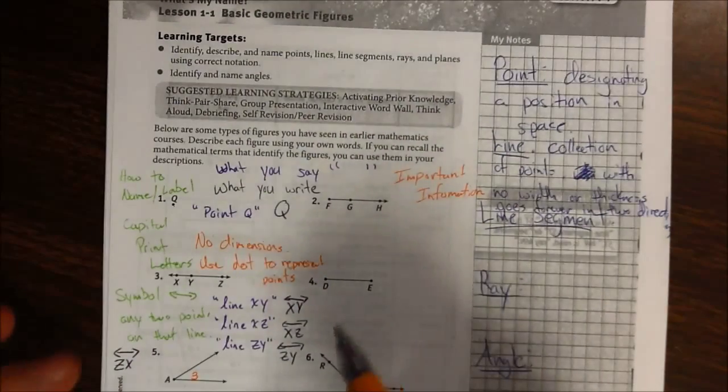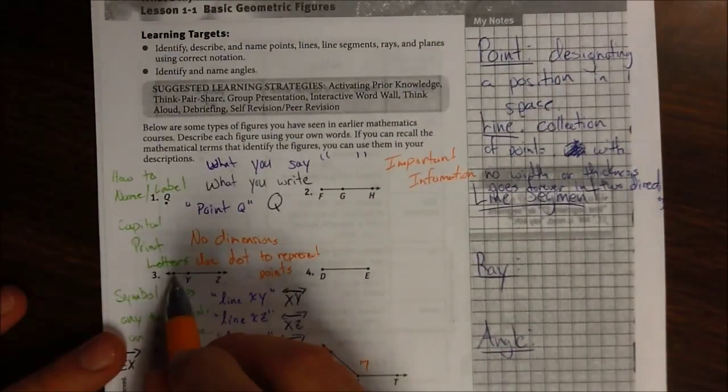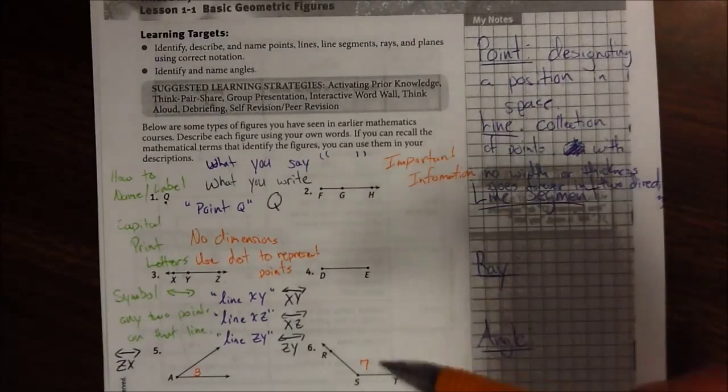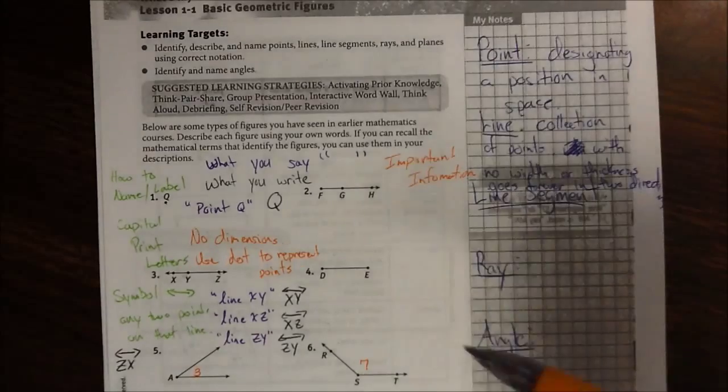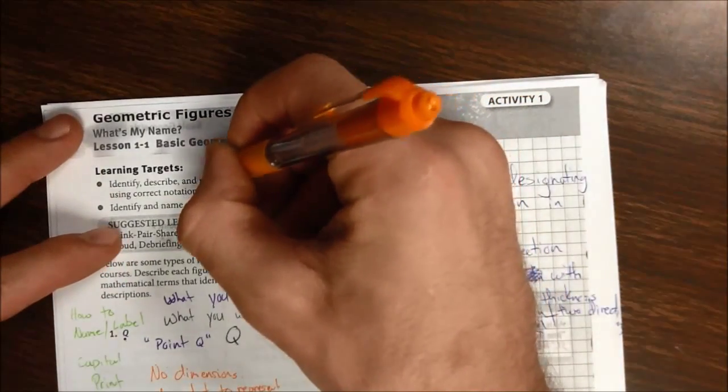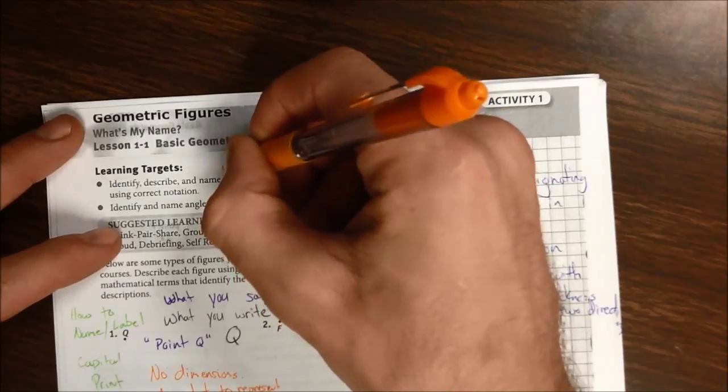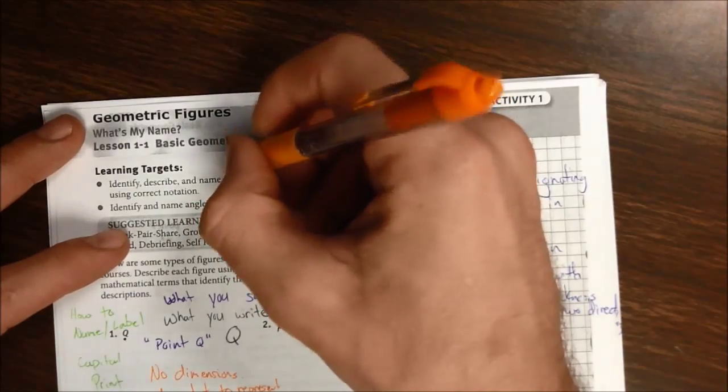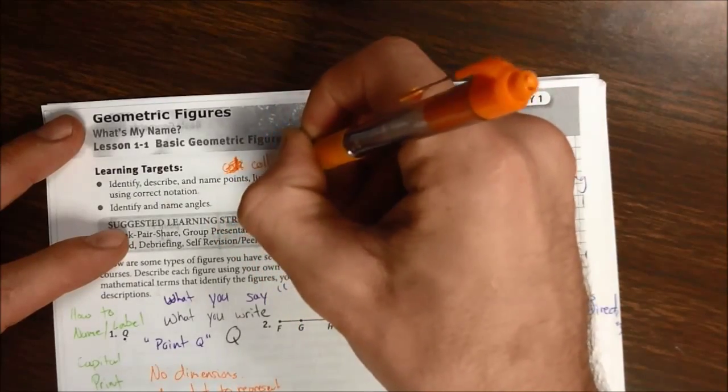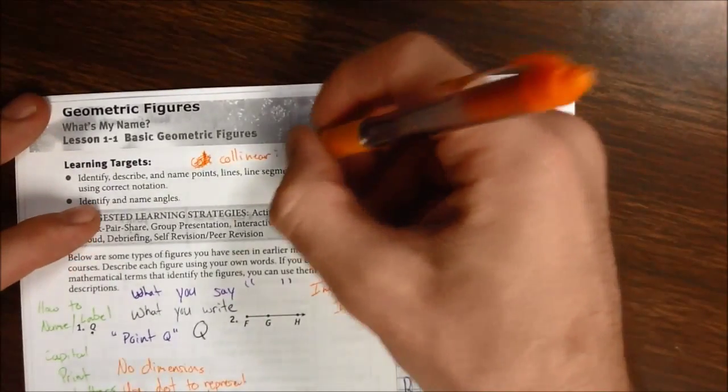There's two terms I'm going to talk about really quickly. We have these three points, X, Y, and Z. Now, since they're all on the same line, there's a special word for that geometric term, and that is collinear. There's two L's in that. Collinear, and that's points on the same line.